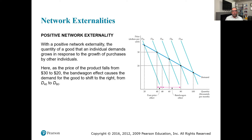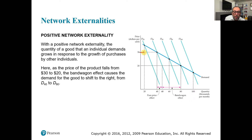We can see that the demand curve for 20 users is D20, then we have D40, D60, D80, and D100. If you look at individual demand, demand changes by a certain quantity, but the overall demand increases more than that. With positive network externality, the quantity demanded grows in response to growth in purchases by others. As the price falls from 30 to 20, the bandwagon effect causes demand to shift right from D40 to D80.